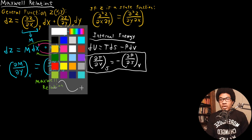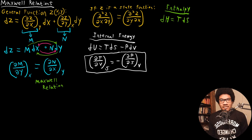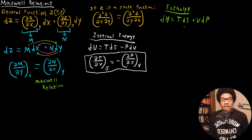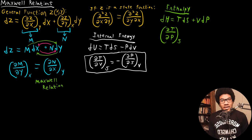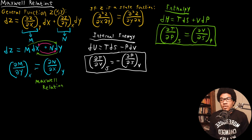Next, let's do the enthalpy. The differential for the enthalpy is dH equals T dS plus V dP. Starting from this differential, we can derive a Maxwell relationship: the partial of T with respect to P at constant S is going to be equal to the partial of V with respect to S at constant P. This is the Maxwell relation we get from the enthalpy differential. Hopefully at this point you're starting to get the pattern of how to apply this cross-derivative rule to get a Maxwell relation.